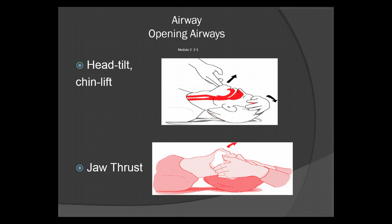To open your airway, you'll use one of two methods. You'll use the head tilt chin lift, where you place two fingers right underneath the mandible and your palm on the patient's forehead. You will then use the two fingers under the mandible to lift the head, thus straightening and opening the airway.